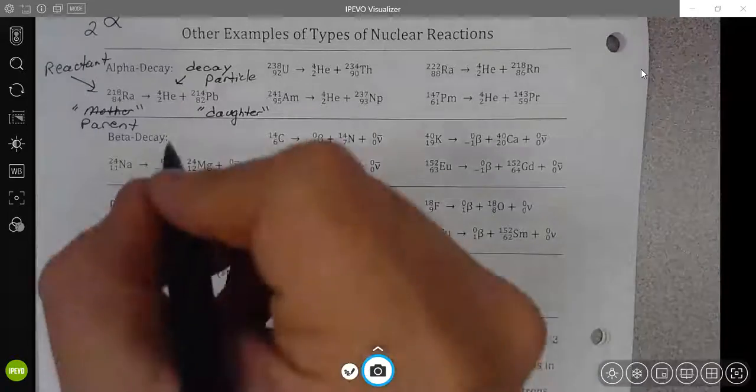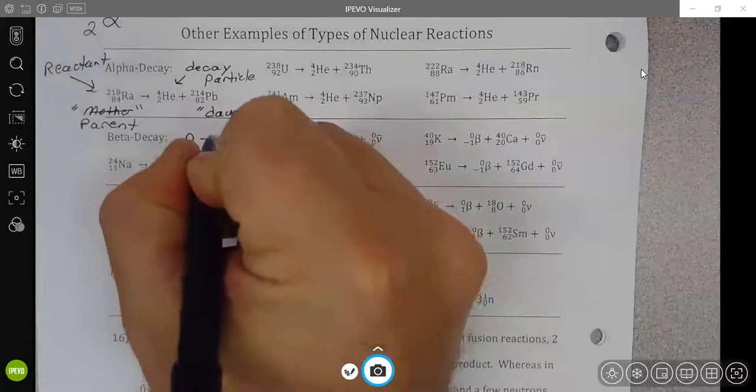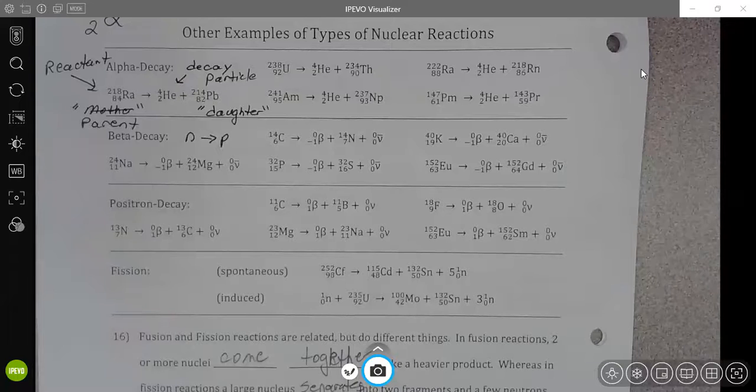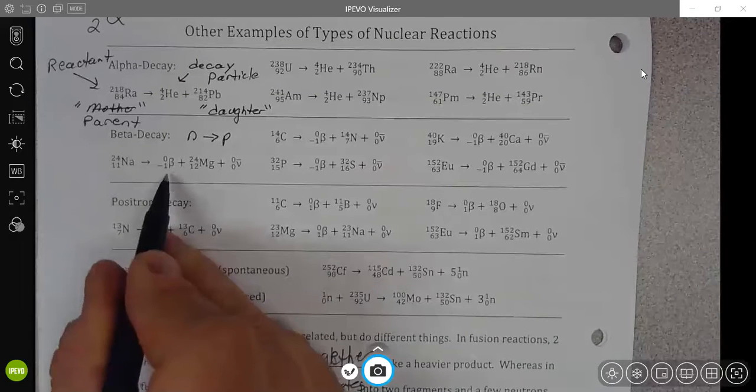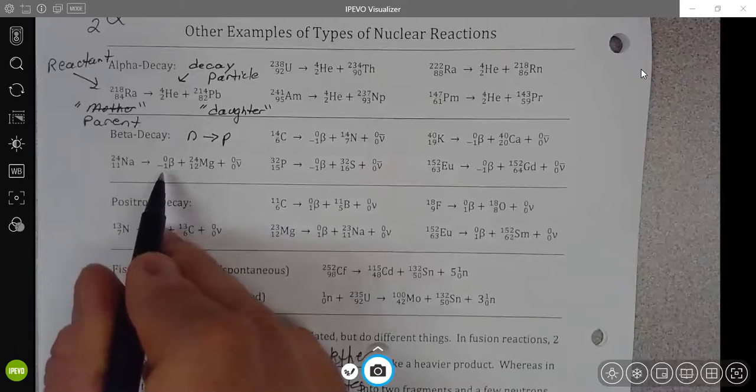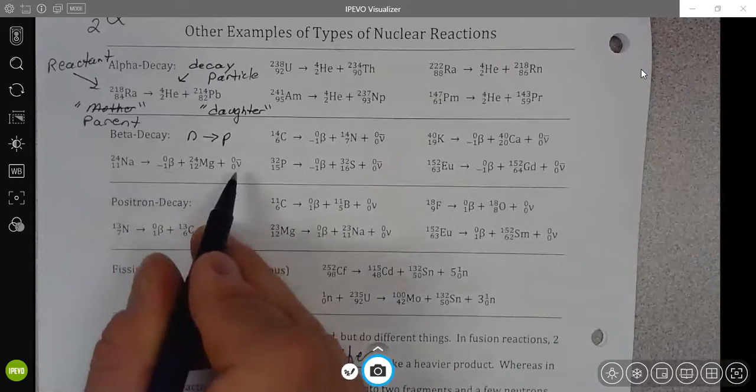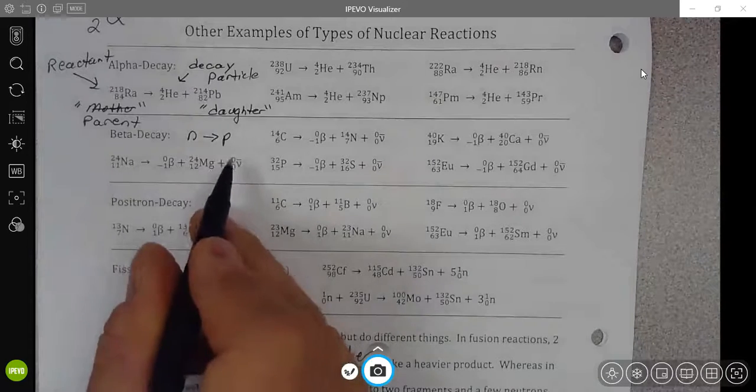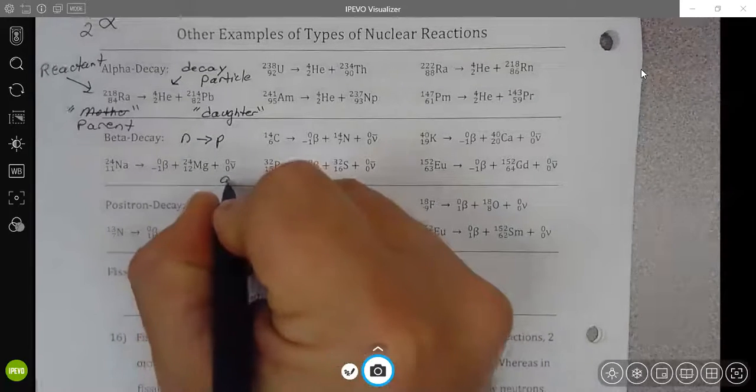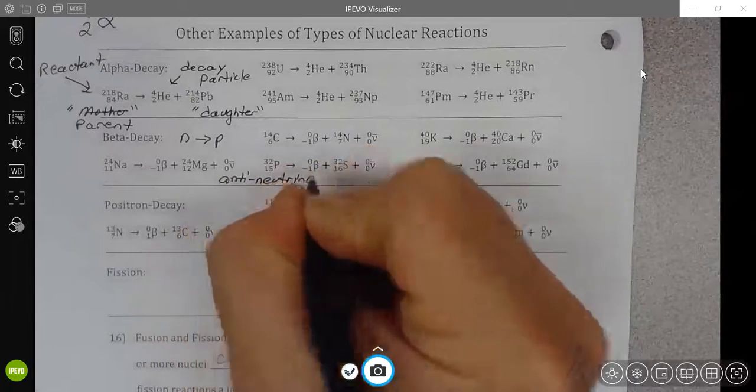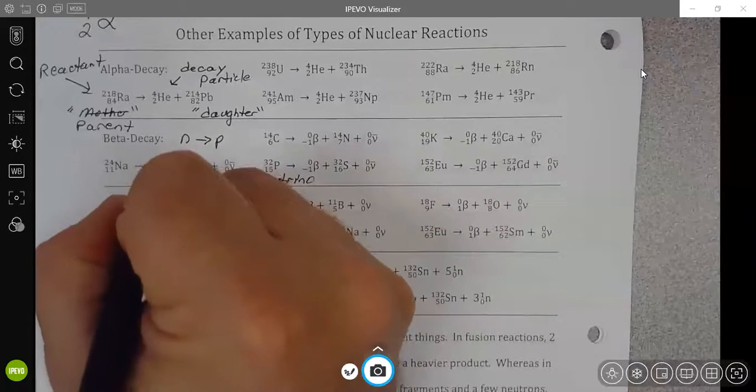This is because in beta decay, we actually have a neutron turning into a proton. When that neutron turns into a proton to keep the charge balance, we have to be creating a negative charge. And to keep the particle balance, we have to be creating something that counters or goes against that electron in terms of types of particles. So then this is known as an anti-neutrino, whereas this is the beta particle.